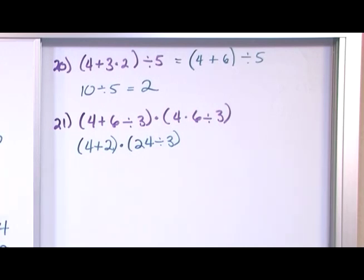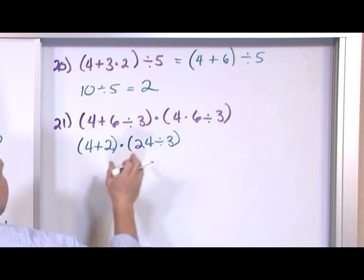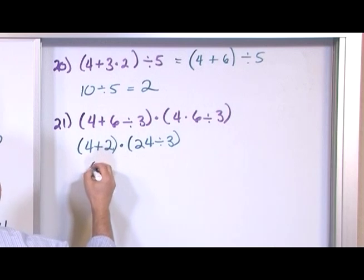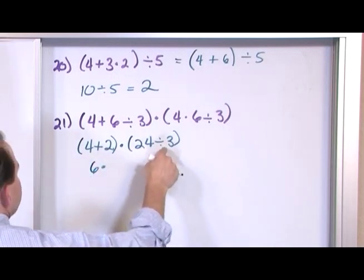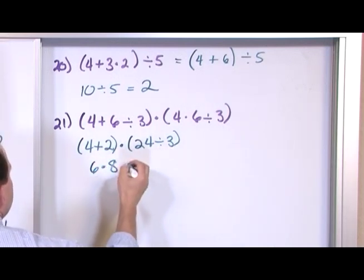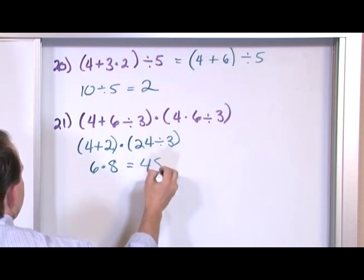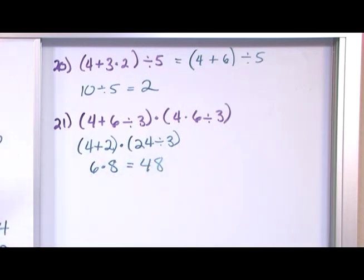Now I still have two sets of parentheses, so I still need to work on the inside of each one. 4 plus 2 is 6 times 24 divided by 3 is 8, and 8 times 6 is 48, so that's the answer. We're going to get 48.